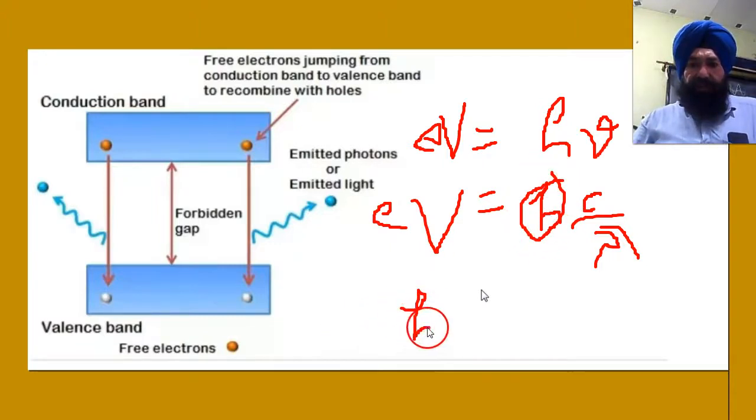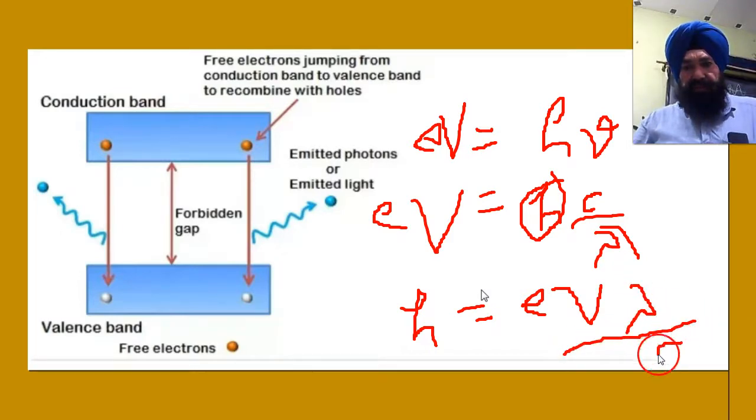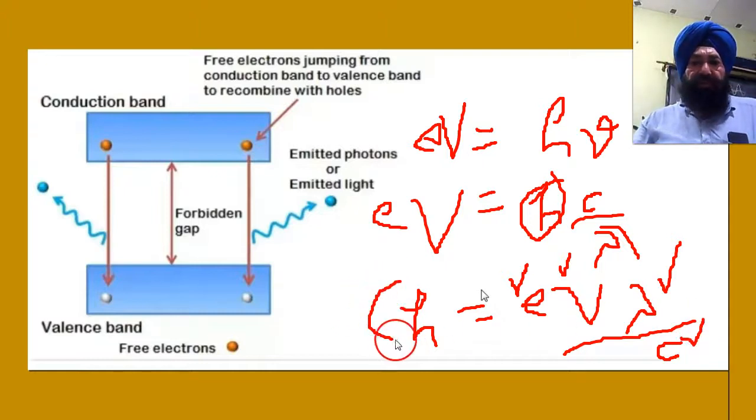So Planck's constant h will be equal to eVλ upon C. Charge value you know, potential you have calculated, like 1.74 for red, wavelength is known, light velocity is known, Planck's constant you will get. Very simple.